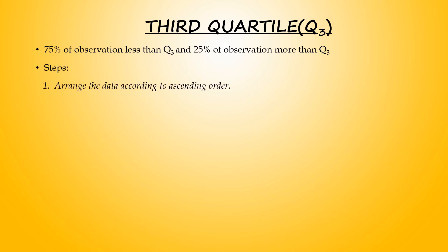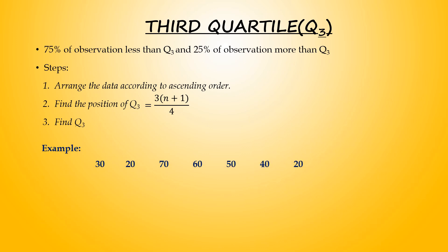How to calculate Q3: first, arrange the data from smallest to highest. Next step, find the position. Based on the position obtained, find the value of Q3. In this example, arrange the data, then find position of Q3: 3×(7+1)/4 gives position 6.